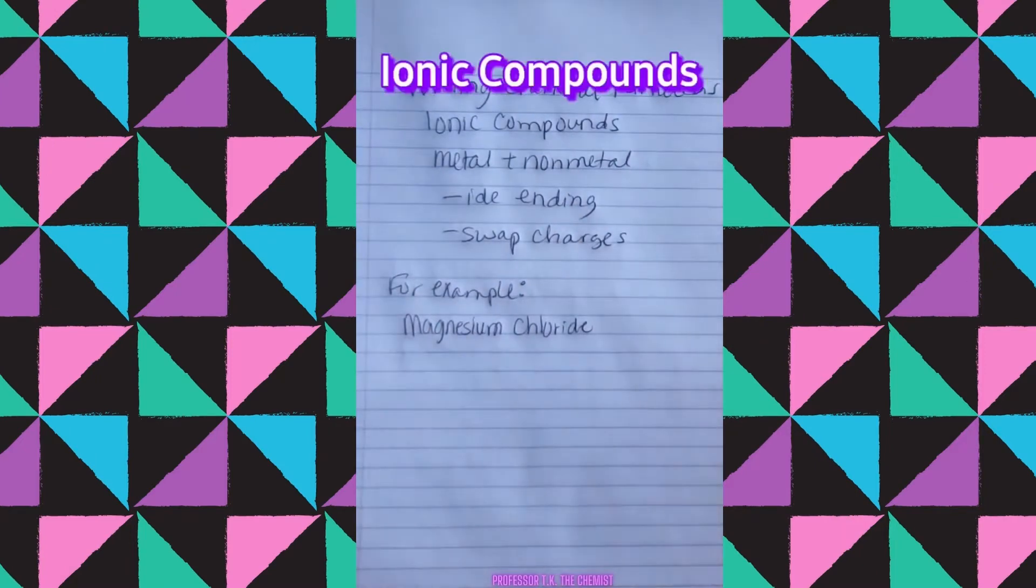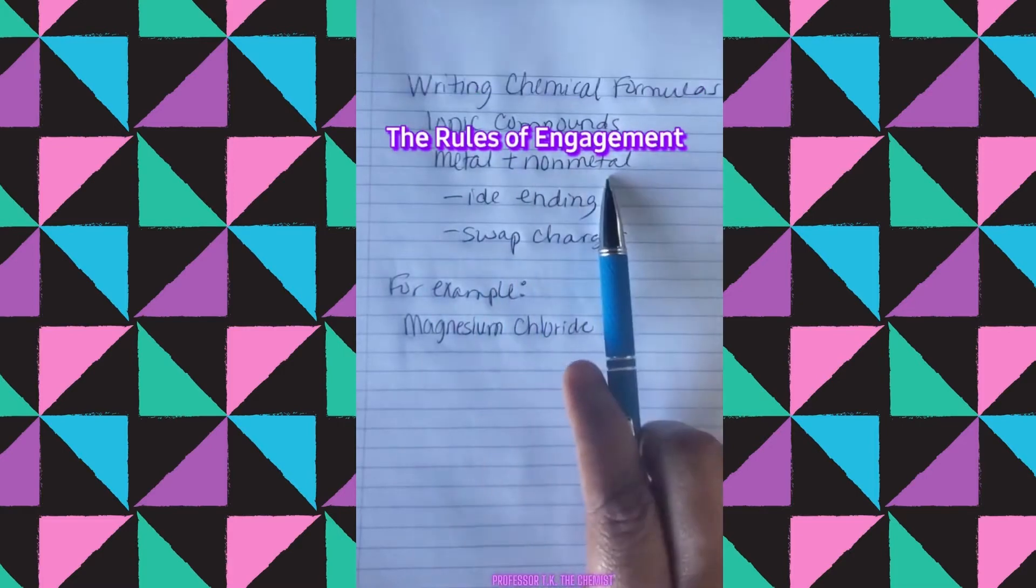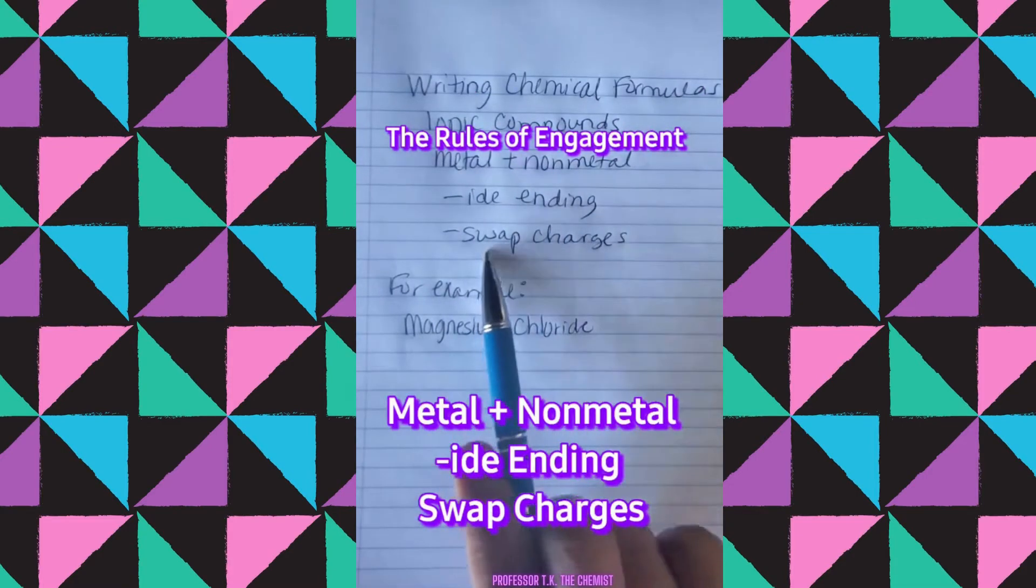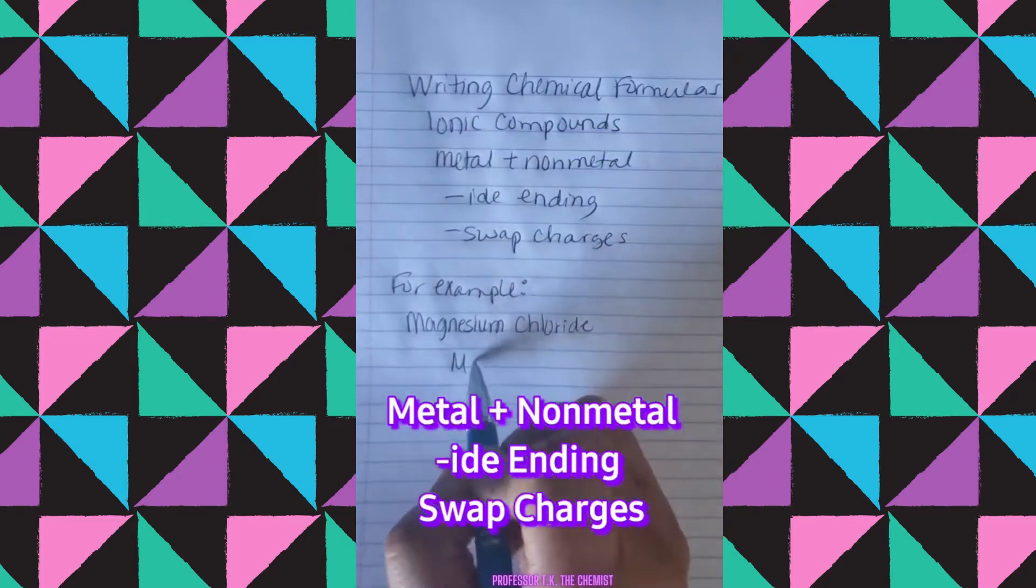Let's write formulas. Let's get into it with Professor TK, the chemist. First off, we're going to do one that has ionic compounds. That's when you have the metals plus non-metals having an IDE ending and they swap charges.